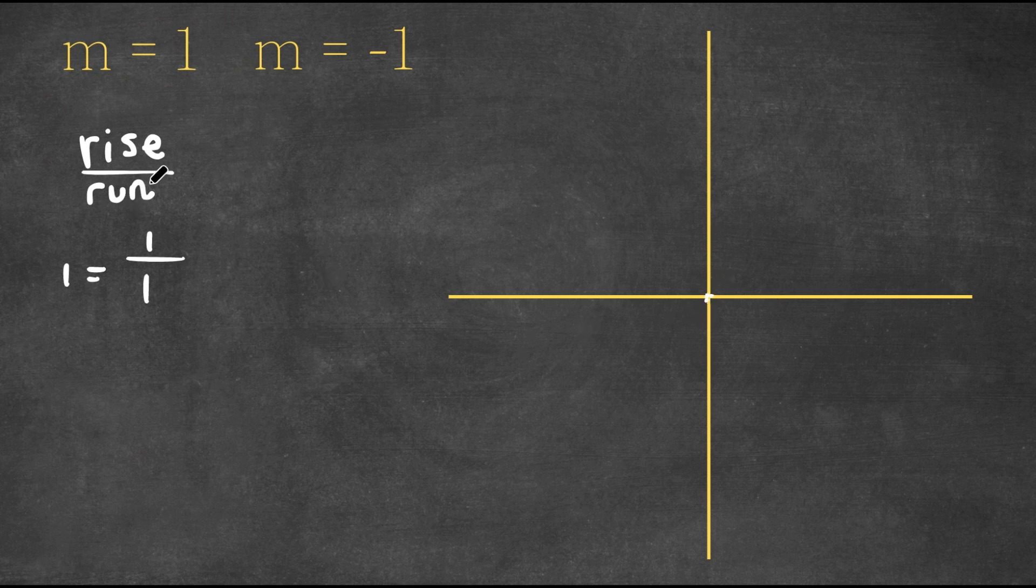So the rise, because this is positive, we go up by one. And the run is positive, so we go to the right by one.